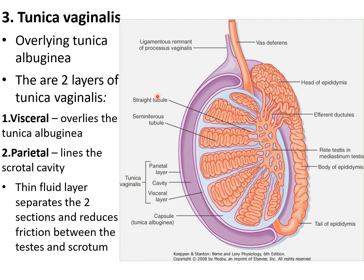The third layer is tunica vaginalis. It overlies tunica albuginea and has two layers: the visceral layer and the parietal layer. The visceral layer overlies tunica albuginea, and the parietal layer lies in the scrotal cavity. There is a thin fluid layer in between the visceral and the parietal layer, which reduces friction between the testis and the scrotum.